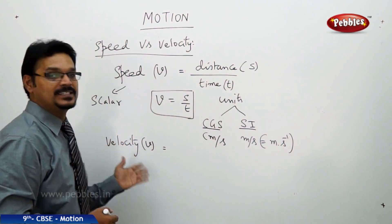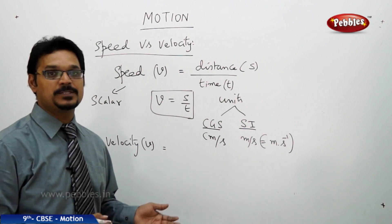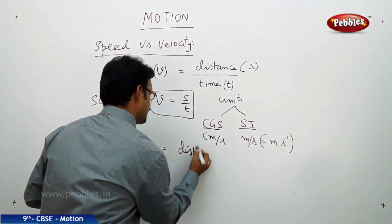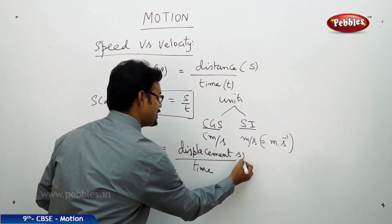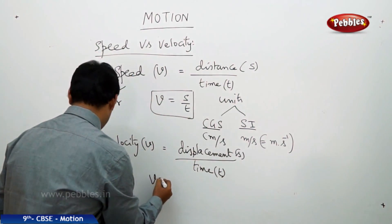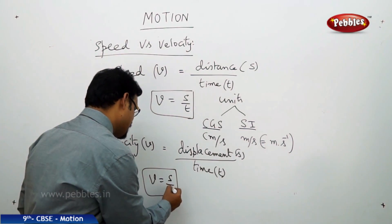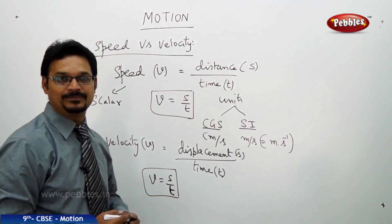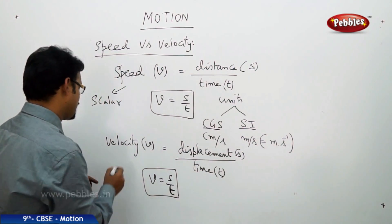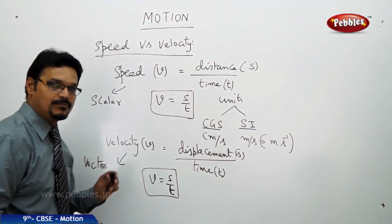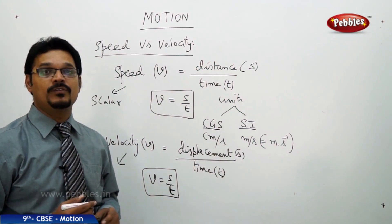Even though we have speed as a scalar quantity, we need a vector quantity — and that is velocity. Velocity is a vector quantity. Its definition: it is the ratio of displacement to time — displacement divided by time. Displacement is represented by S, time by T again. Formula-wise, both look the same: V = S/T. Units are also the same — CGS is centimeters per second, SI is meters per second. But velocity has magnitude as well as direction.